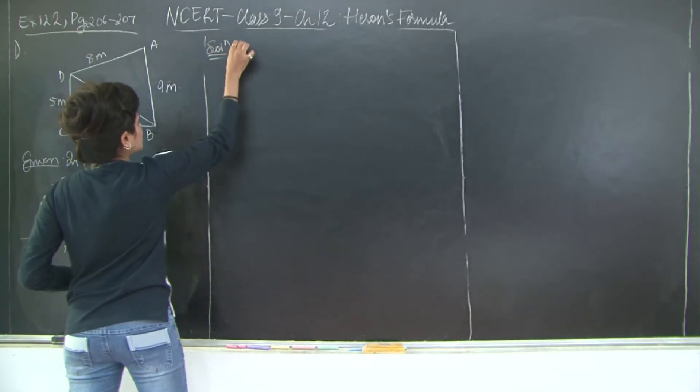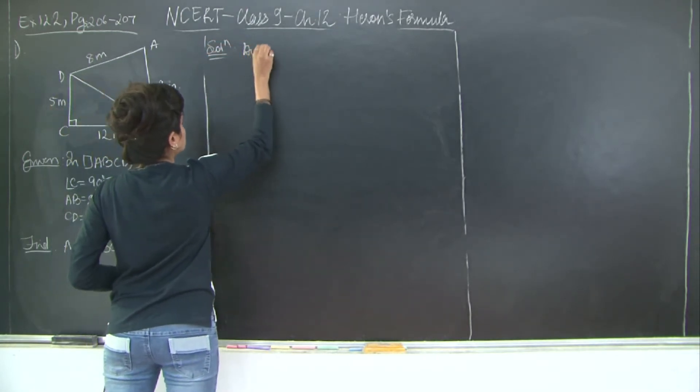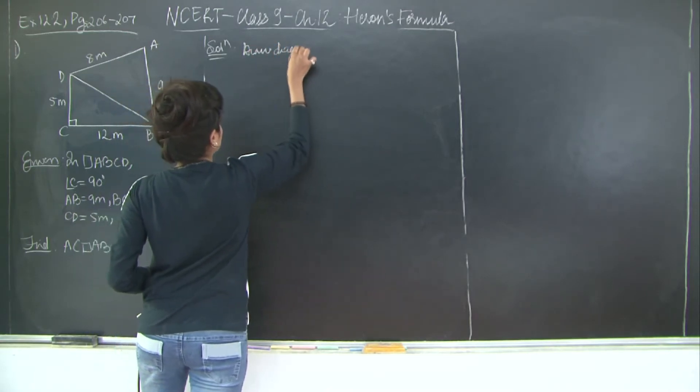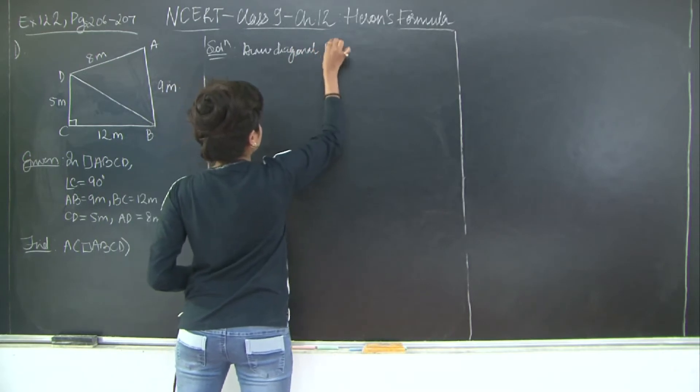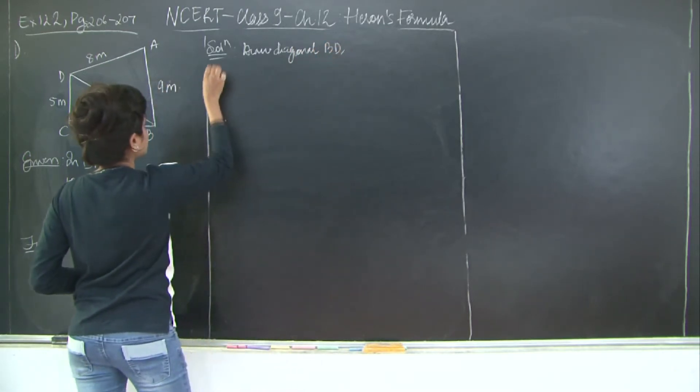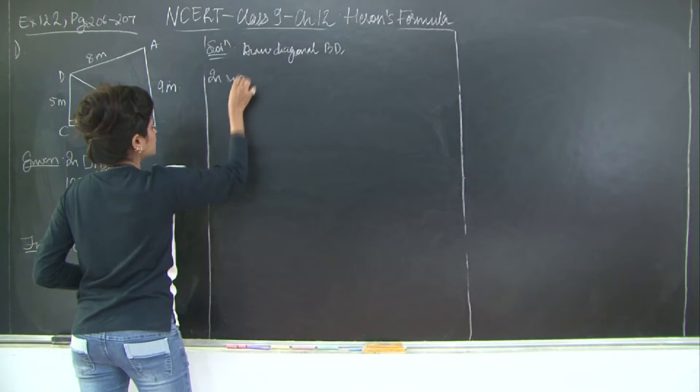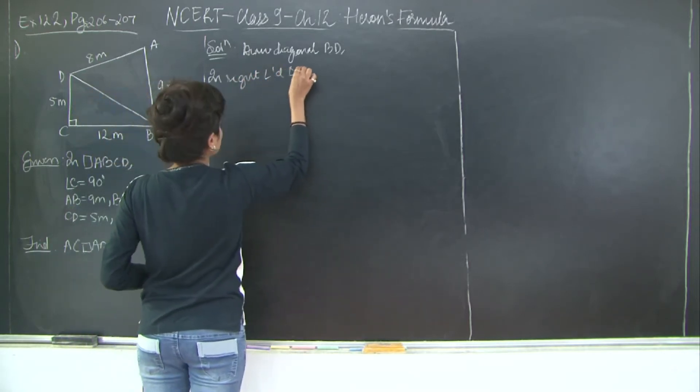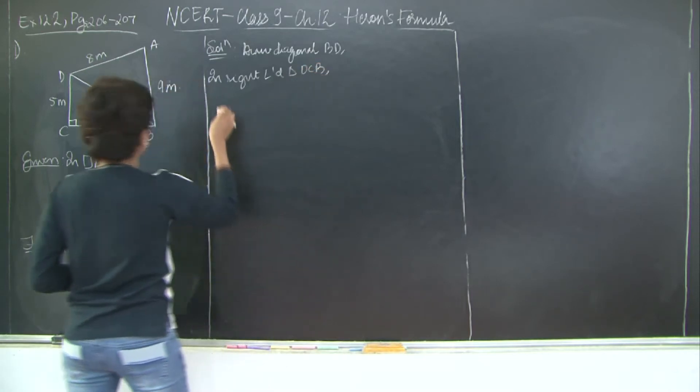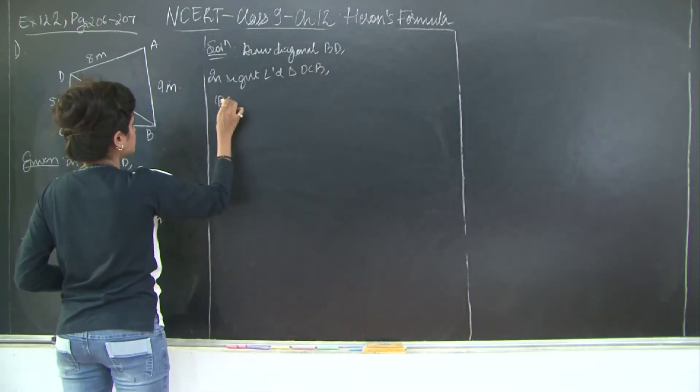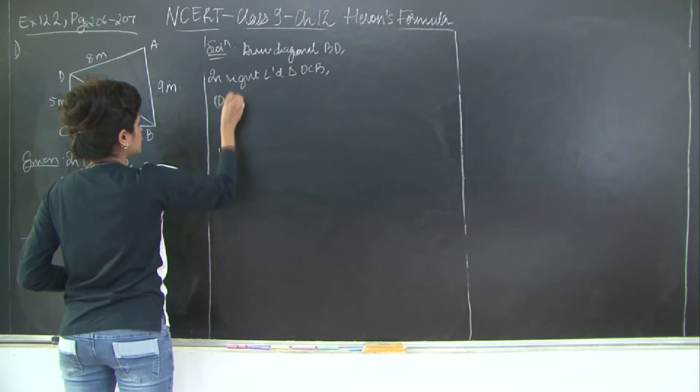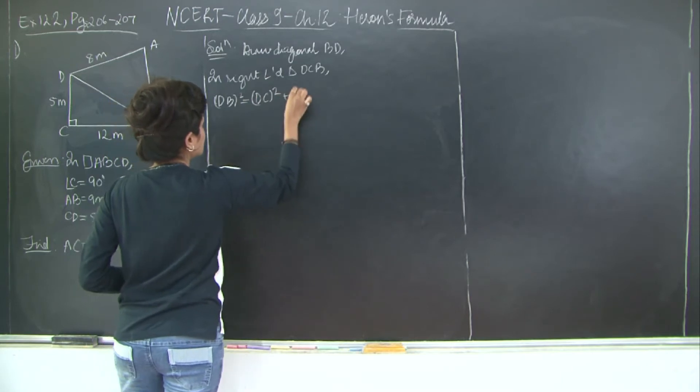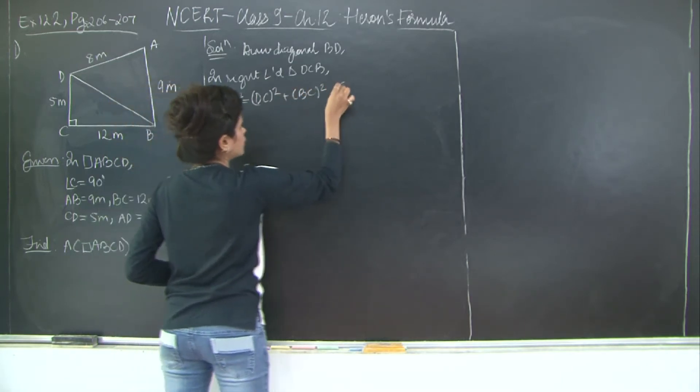So let's go ahead and write the solution. First the construction: draw diagonal BD. So I will say in right angled triangle DCB, I have DB² = DC² + BC². So DB² = 169.